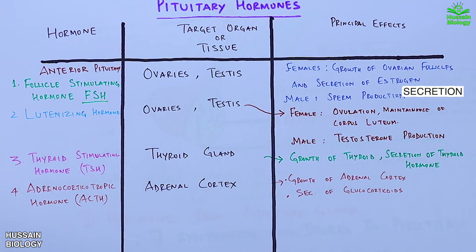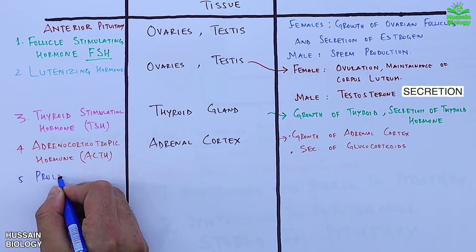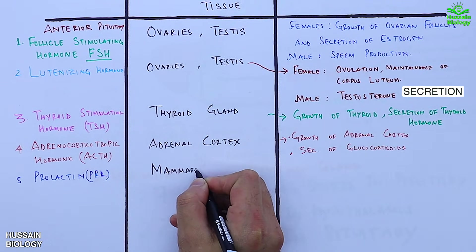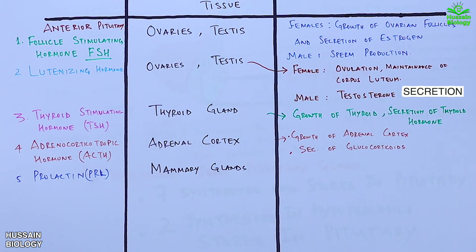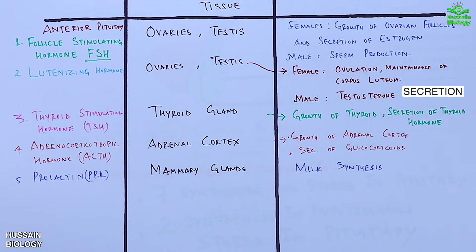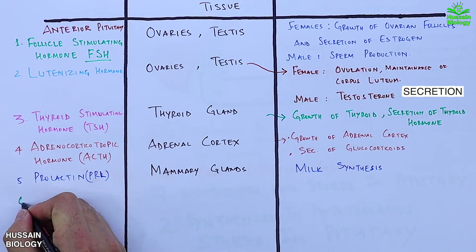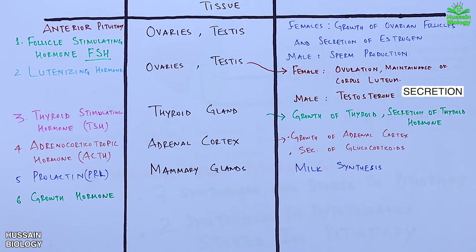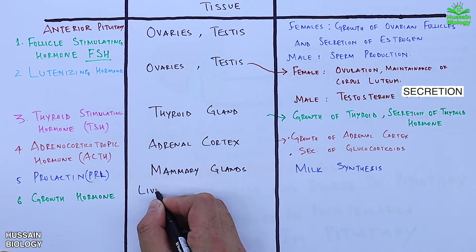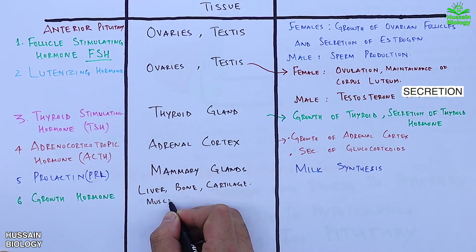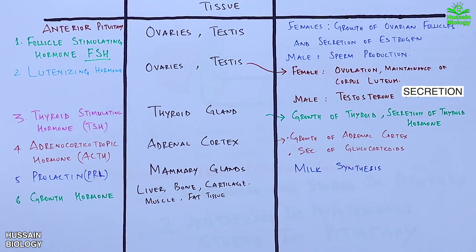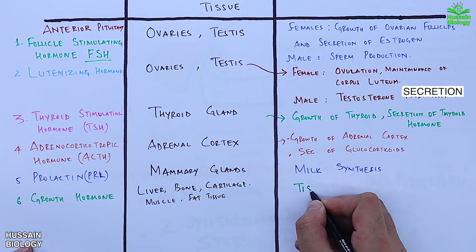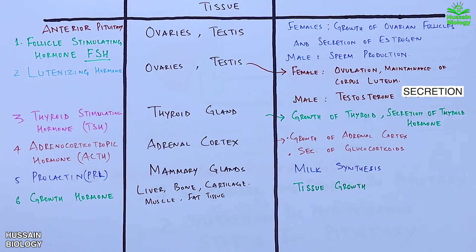The fifth hormone from the anterior pituitary is prolactin (PRL). It targets the mammary glands and aids in milk synthesis. The sixth and last hormone from the anterior pituitary is growth hormone (GH). It targets the liver, bone, cartilage, muscle, and fat tissue. Its principal effects include widespread tissue growth, especially in skeletal tissues.